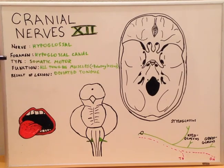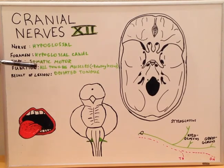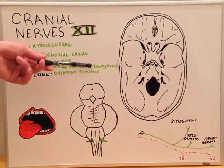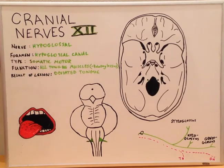It has the somatic motor type of nerve fibers and functions to innervate all of the muscles of the tongue, except for the palatoglossus muscle, which is innervated by cranial nerve number 10, the vagus nerve.